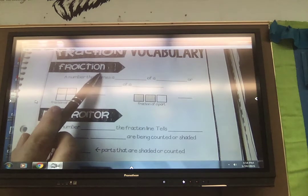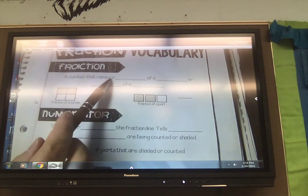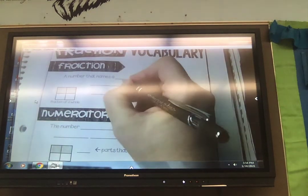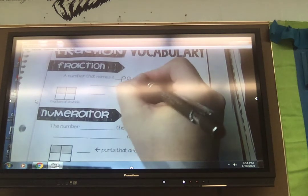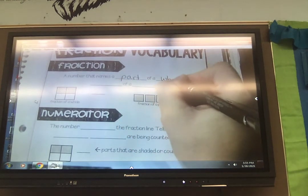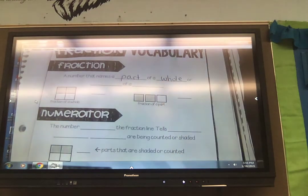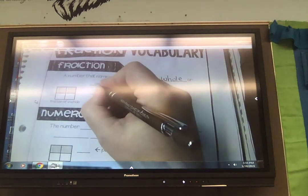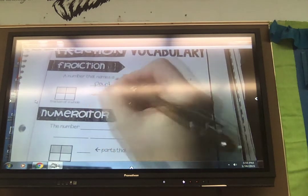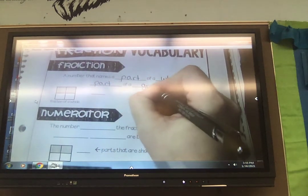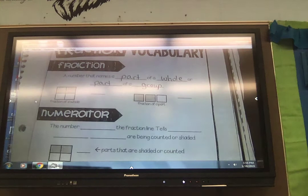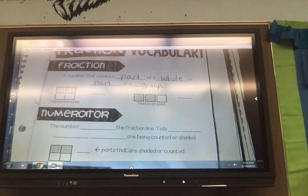A fraction is a number that names part of a whole or part of a group. Part of a whole or part of a group. We can see fractions both of those ways.